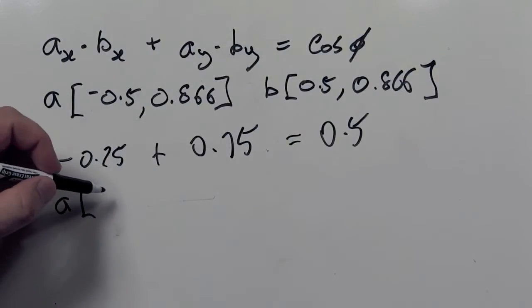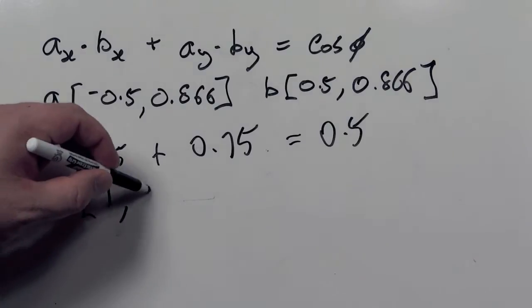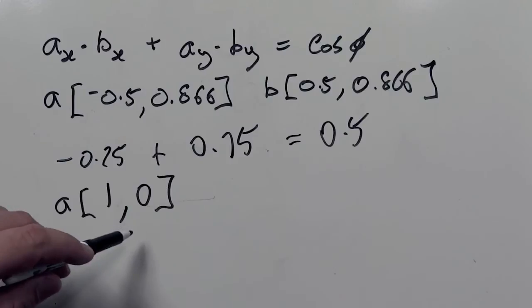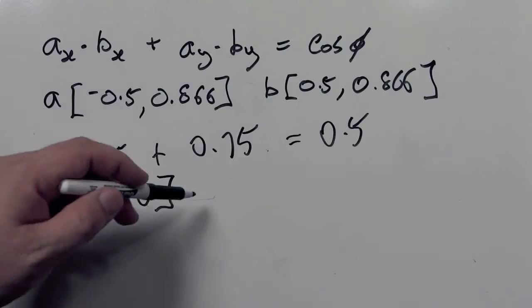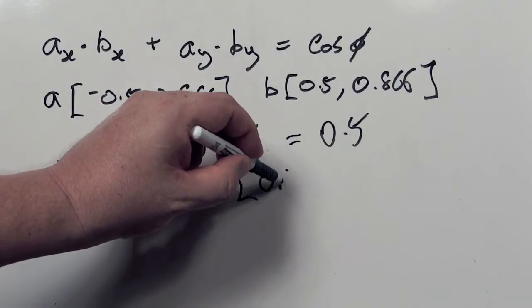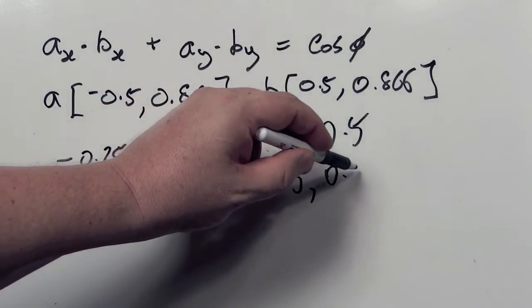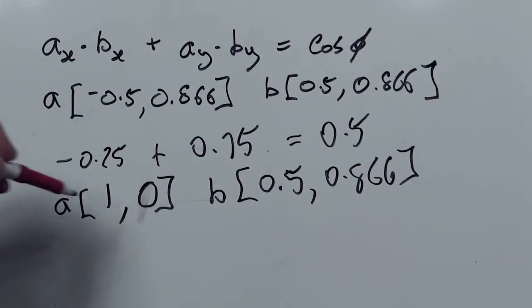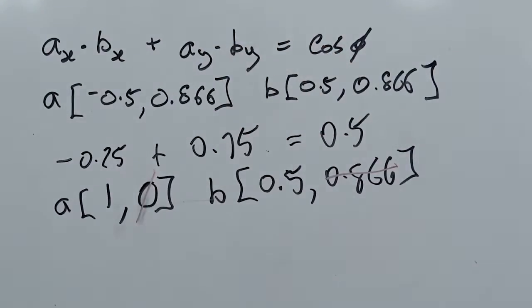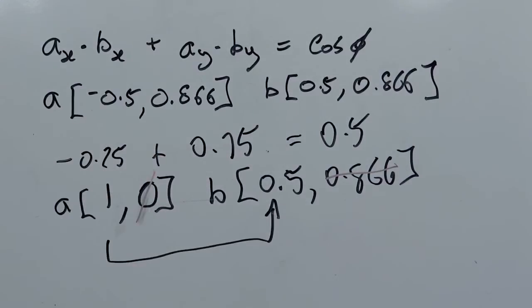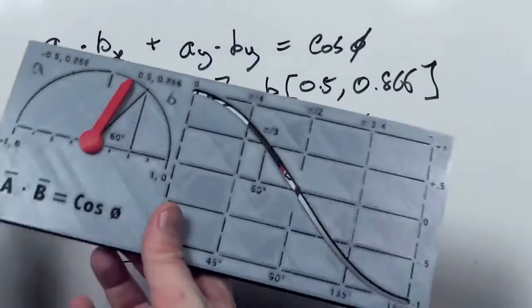An interesting thing happens if one of our points is on the X axis. Let's say we take X=1, Y=0 for A, and for B we use the same number as before. On the Y side, because we've got 0 here, it cancels that out, and because it's a unit vector, we just have 1 times the X axis.